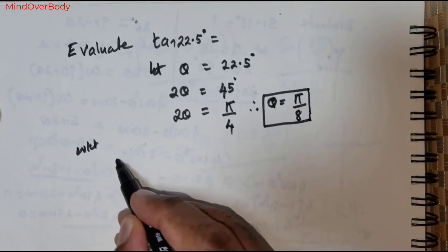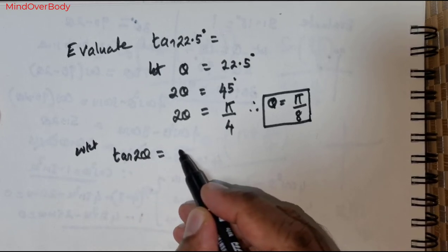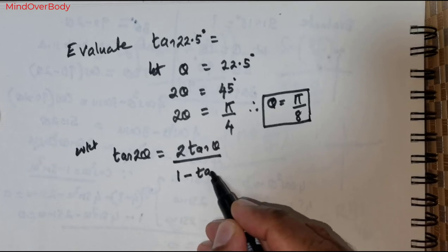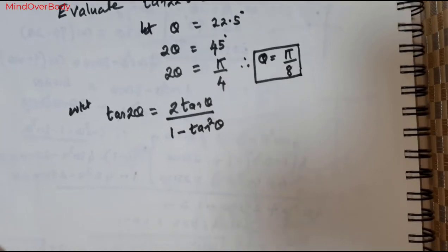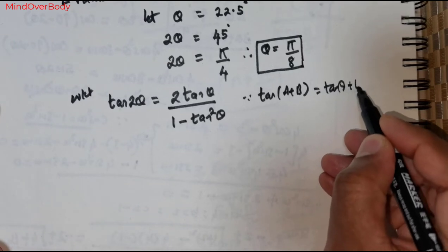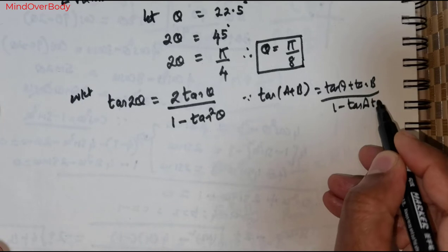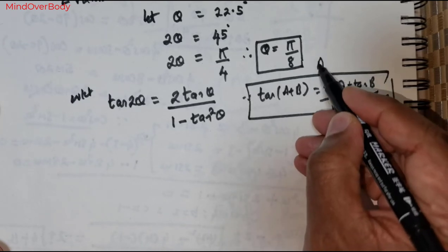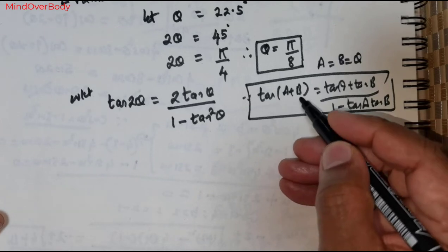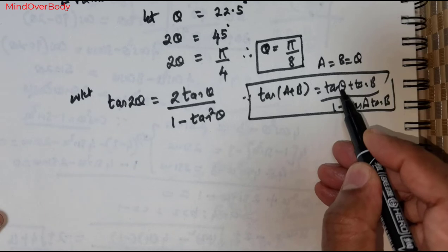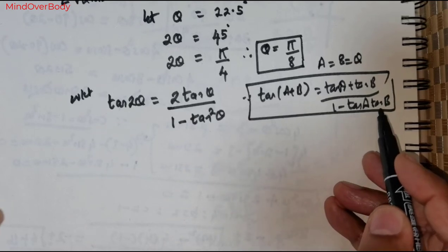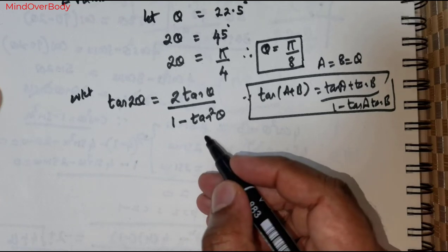Now we know a formula: tan of 2 theta is equal to 2 times tan theta divided by 1 minus tan squared theta. How do we get that? Because we know that tan of (A + B) equals tan A plus tan B divided by 1 minus tan A times tan B. Using this formula, in place of A and B we substitute theta, giving tan of (theta + theta), which is tan 2 theta. Adding the numerators gives 2 tan theta, and the denominator is 1 minus tan squared theta.